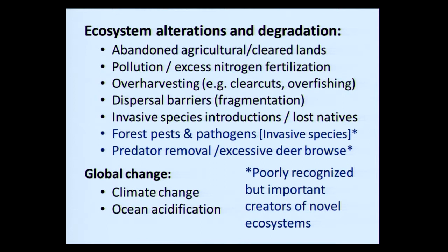Examples of ecosystem alteration that create novel ecosystems include abandoned lands, pollution, nitrogen fertilization, over-harvesting, and dispersal barriers or fragmentation. Also invasive species introductions, loss of native species, and forest pests and pathogens — a subcategory of invasive species rarely mentioned in the literature as a cause of novel ecosystems, but clearly they could be. Predator removal leading to excessive deer browse is a very poorly recognized but important cause. We have novel ecosystems created by deer browse across much of the eastern United States. And global change — climate change, acidification.